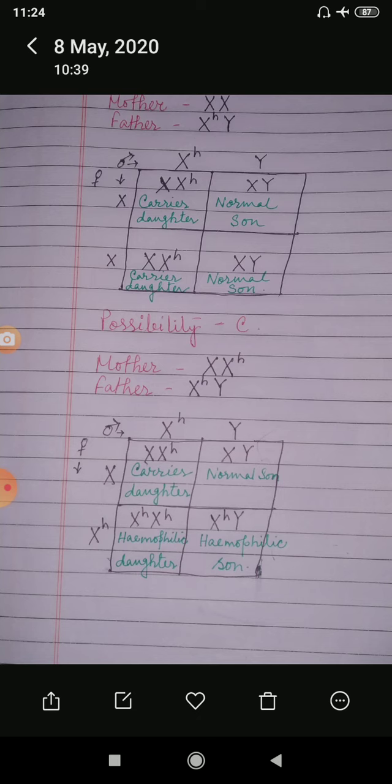In the case of the hemophilic daughter, both the X chromosomes are carrying small h and small h — that means no capital H is present, so there is no one to mask the hemophilic recessive gene. Therefore, we get one hemophilic daughter and one hemophilic son.